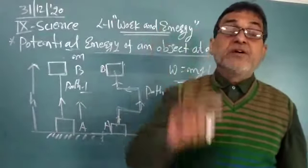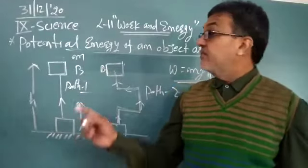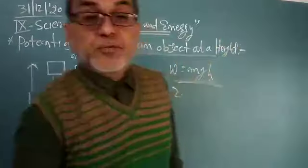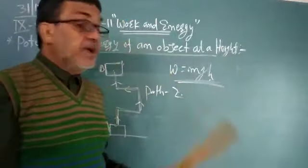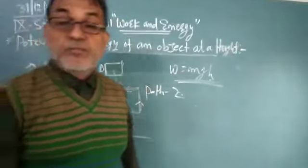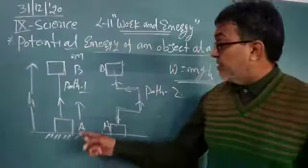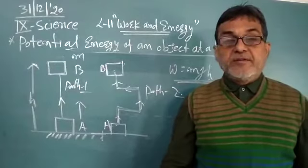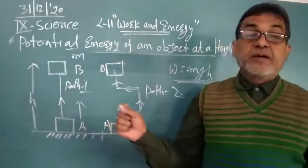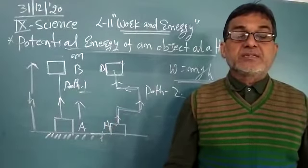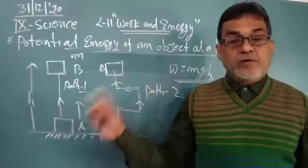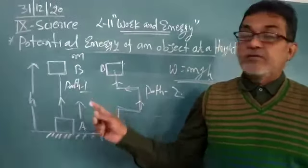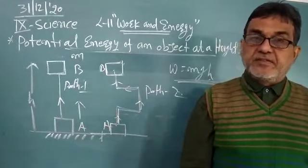So today we learned: potential energy at a certain height is given by W = mgh, or EP = mgh. The potential energy depends on mass and height, not on the path. Next time we will start numerical problems based on this formula. Write the equation: W = mgh, potential energy. Thank you.